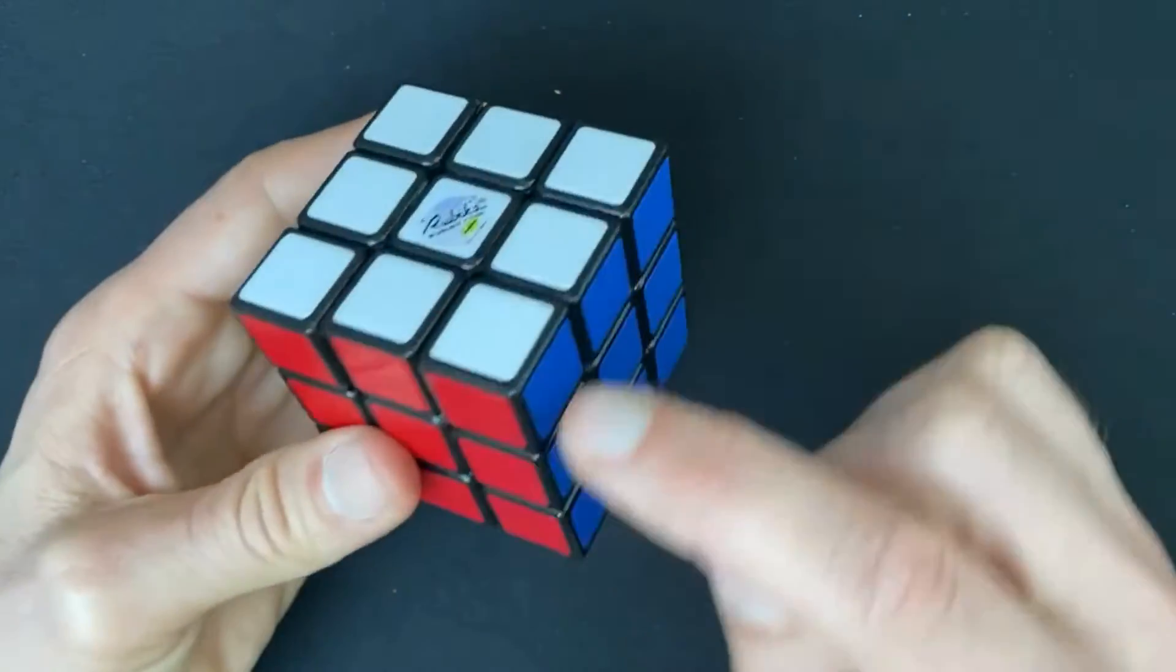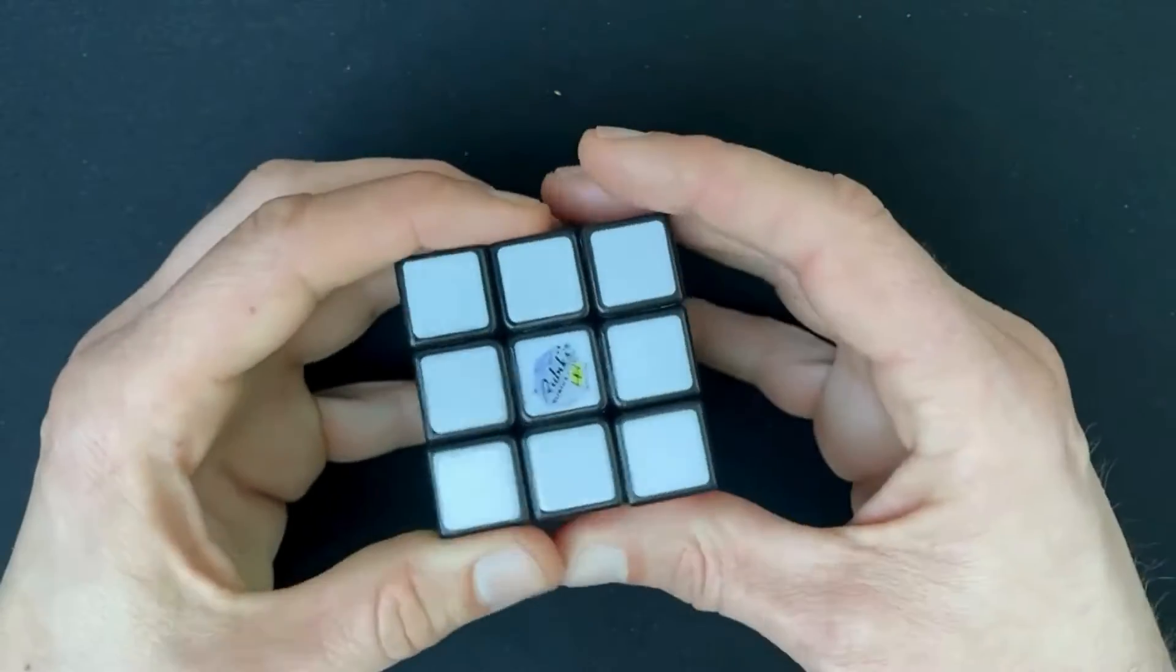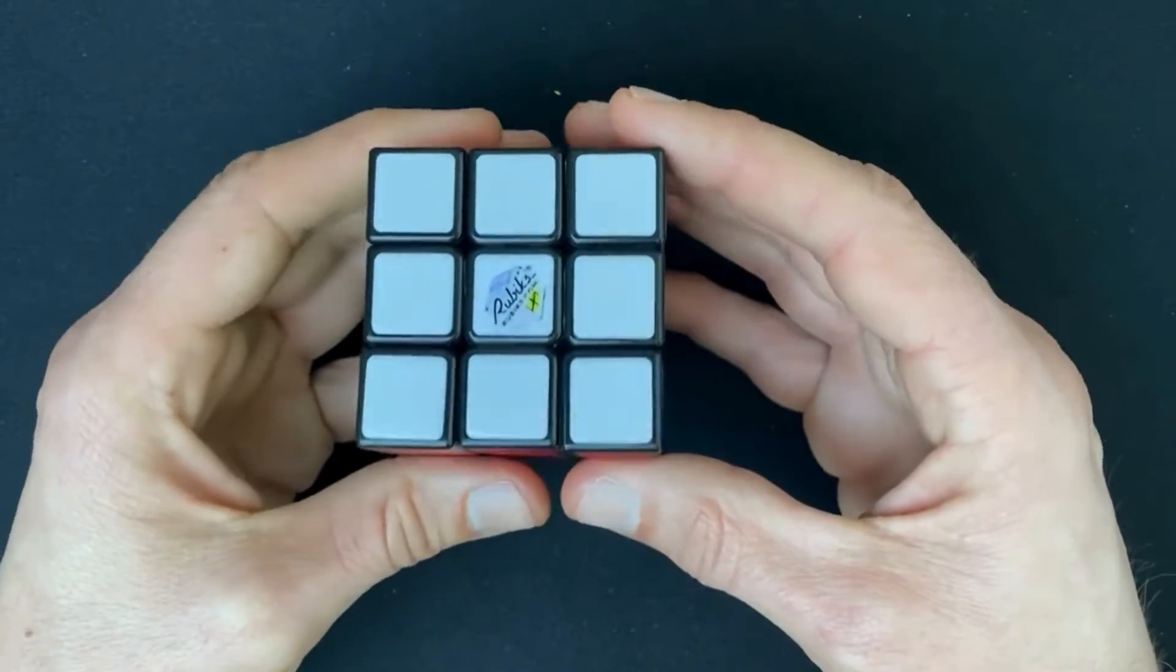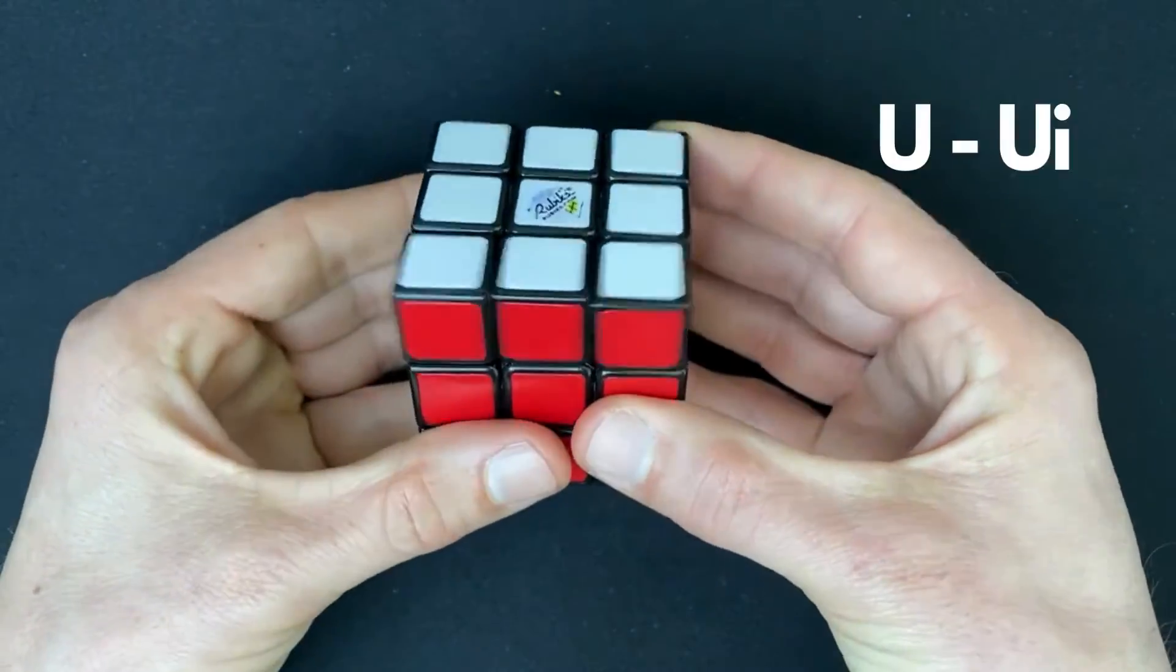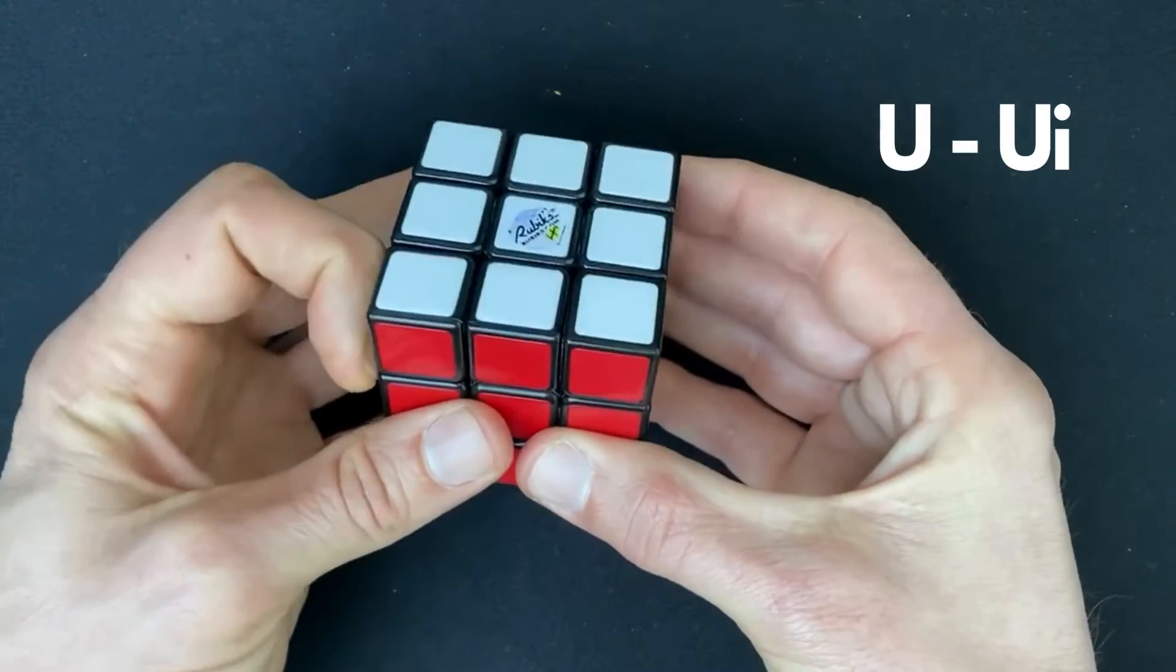Then the next layer is the top layer of the cube. It's indicated with a U, upper layer. So this is a U, U. And a U, and a U inverted.